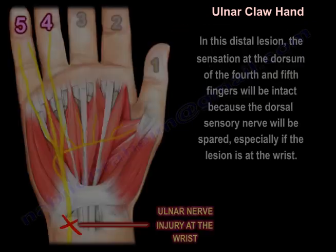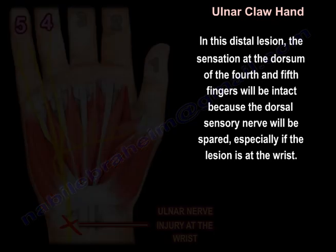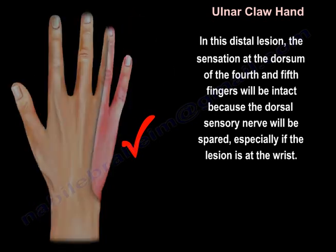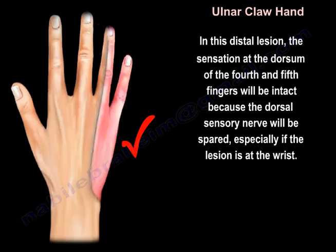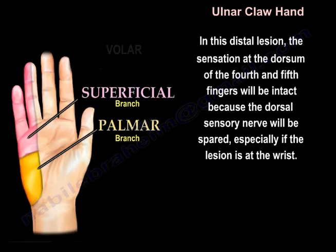In this distal lesion, the sensation at the dorsum of the fourth and fifth fingers will be intact because the dorsal sensory nerve will be spared, especially if the lesion is at the wrist.